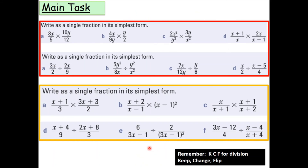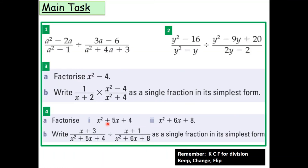Now try two questions from each line of questions — two multiplication and two division questions from the red set, two multiplication and two division from the amber set. That's four from the red and four from the amber. Also try any two of the green questions. Once you've got your answers with working out, upload a photo of your work onto Class Charts to complete the work for this lesson.